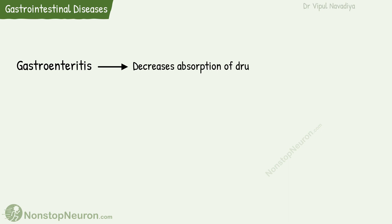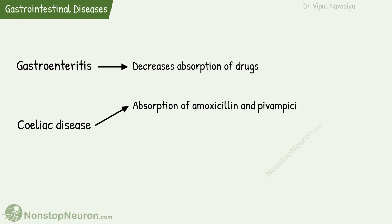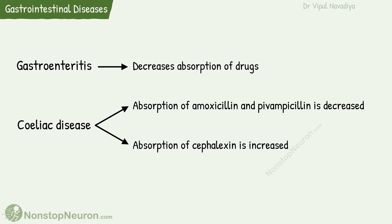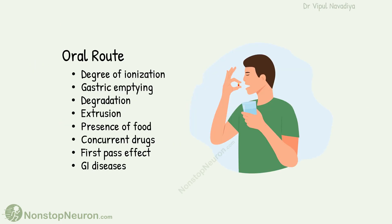The last factor affecting absorption by the oral route is gastrointestinal diseases. For example, gastroenteritis decreases the absorption of drugs. In celiac disease, absorption of amoxicillin and pivampicillin is decreased, whereas absorption of cefalexin is increased. So these were all the factors affecting absorption by the oral route.